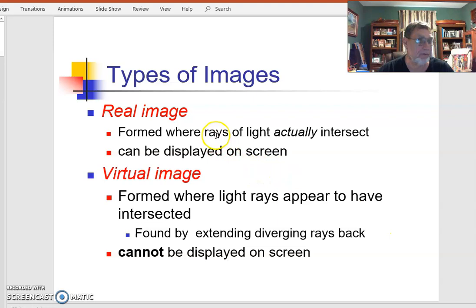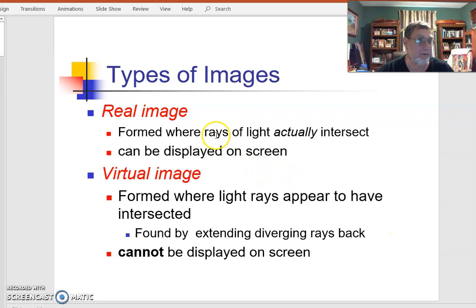Images come in two types. They're either real or virtual. Real means the actual rays form. You're looking at a real image, for example, when we're in the classroom and you're looking at the projected image onto the smart board. That's a real image.